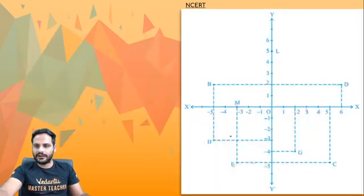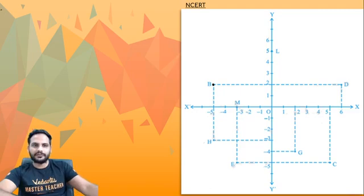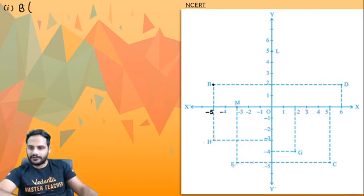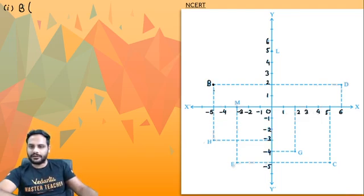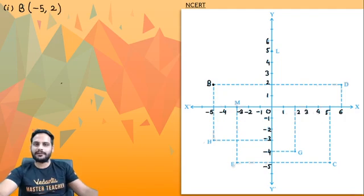First question is coordinates of B. Point B is over here. On the x-axis it is intersecting at minus 5, and the y-coordinate is 2. So the coordinates of point B are (−5, 2). We always write the x-coordinate first, then the y-coordinate.